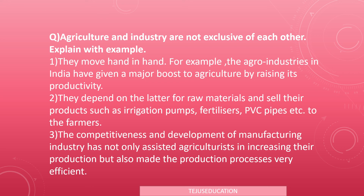Industries also sell their products such as irrigation pumps, fertilizers, and PVC pipes to farmers. The competitiveness and development of manufacturing industry has not only assisted agriculturists in increasing production but also made the production process very efficient, as machines help produce more in less time. Please learn this question along with the answer and read the lesson.